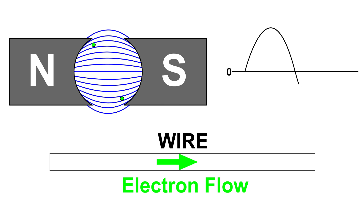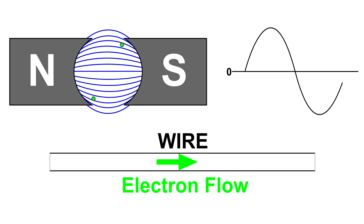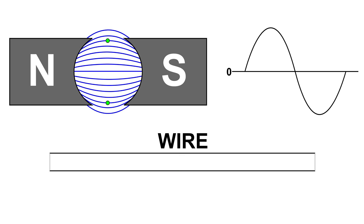The wire loop continues to rotate in the same direction at the same speed, and now some negative voltage is being developed. Look at the wire — we have electron flow, but it is in the opposite direction. The wire loop continues to rotate and we reach a point where it is the most negative. The wire is still rotating and now we are heading towards zero, but notice that the electron flow is still the same but becoming less. Now we have reached zero again.